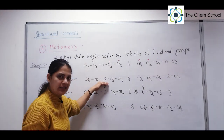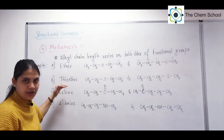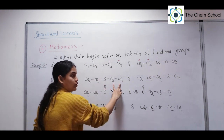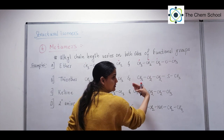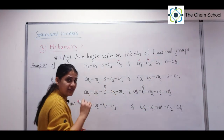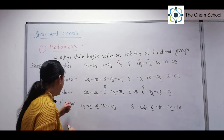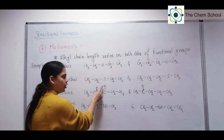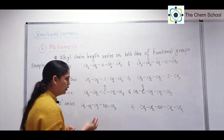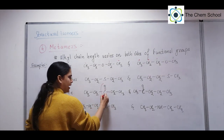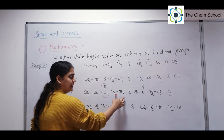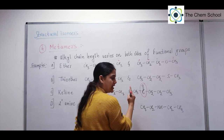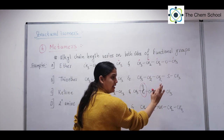If we replace the oxygen with sulfur, it was ether — same example. Here this side has two carbons and this side has two carbons, but on the left-hand side there is only one carbon. For ketone — C double bond O — on one side two carbons and the other side two carbons; in the second case, the left-hand side is one carbon and the right-hand side is three carbons.